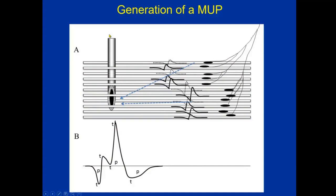Now it comes to voluntary EMG. This discussion is true both for concentric needle electrode and for monopolar electrode. Here are the end plates and the electrical activity travels in both directions from the end plate. Single fiber potentials are generated from each muscle fiber with higher amplitude from those fibers that are close to the recording tip. When they arrive at the electrode, they have a certain scatter, mostly dependent on different speed along the muscle fibers, which is directly related to muscle fiber diameter.